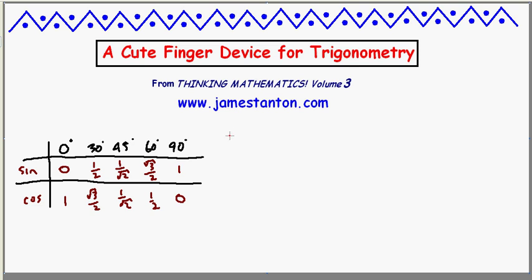However in trigonometry, there is one fact about our curriculum that we do make kids memorize: the standard values of sine and cosine for the standard angles 0, 30, 45, 60, and 90 degrees.